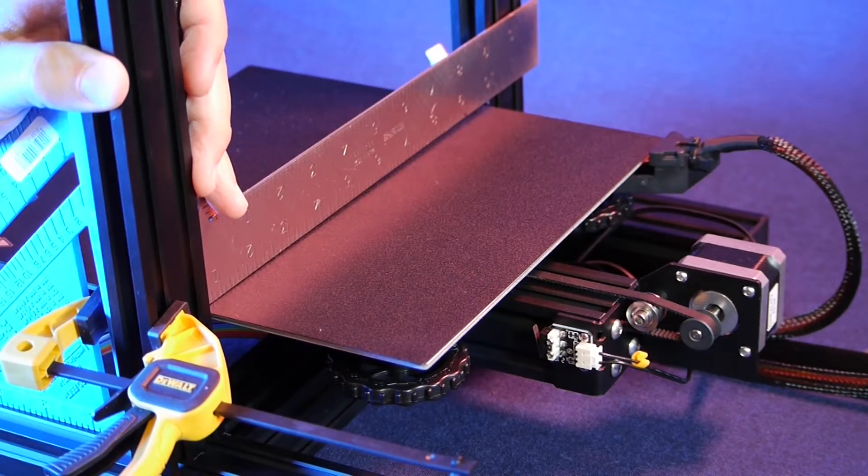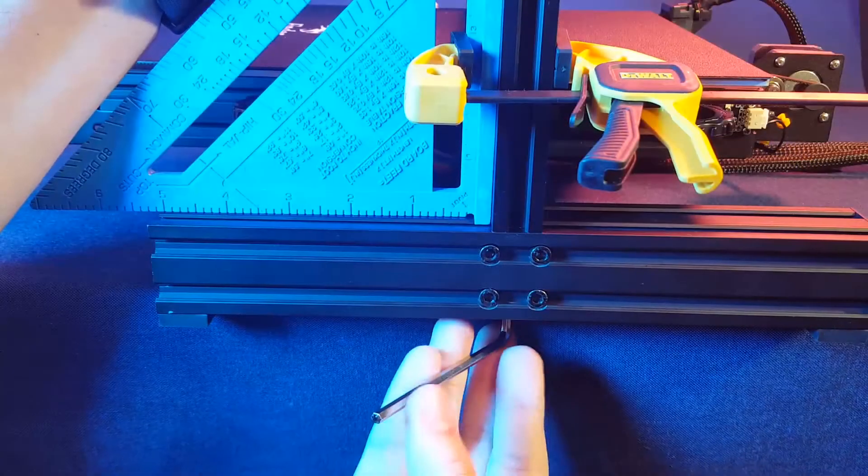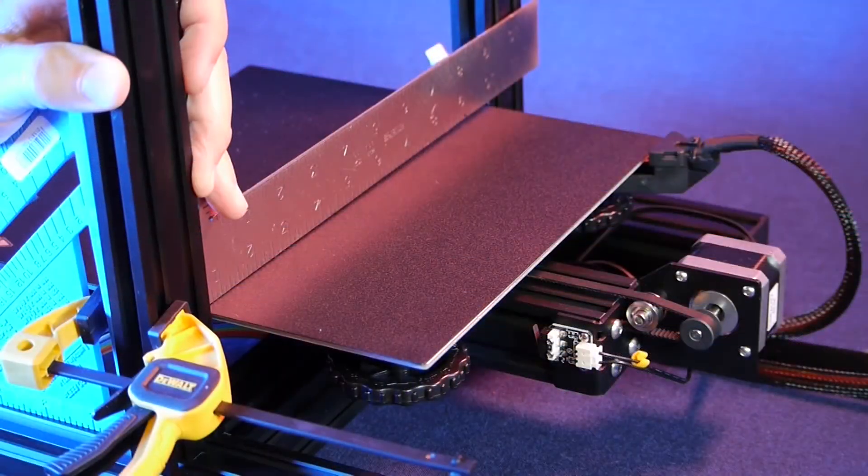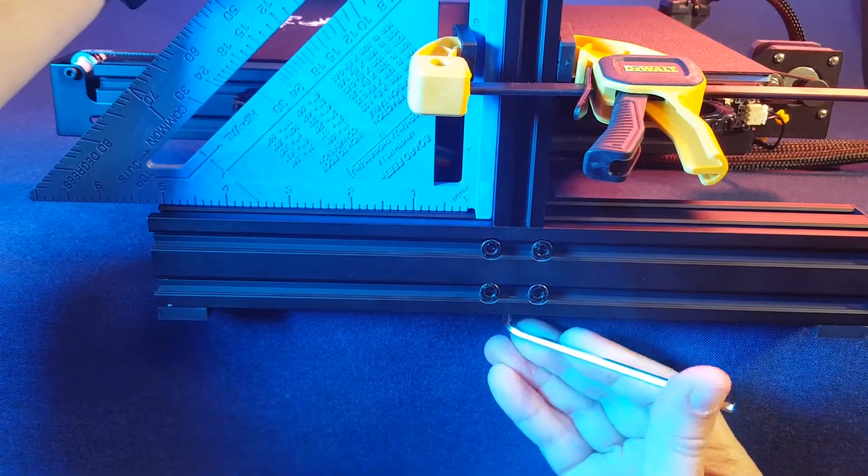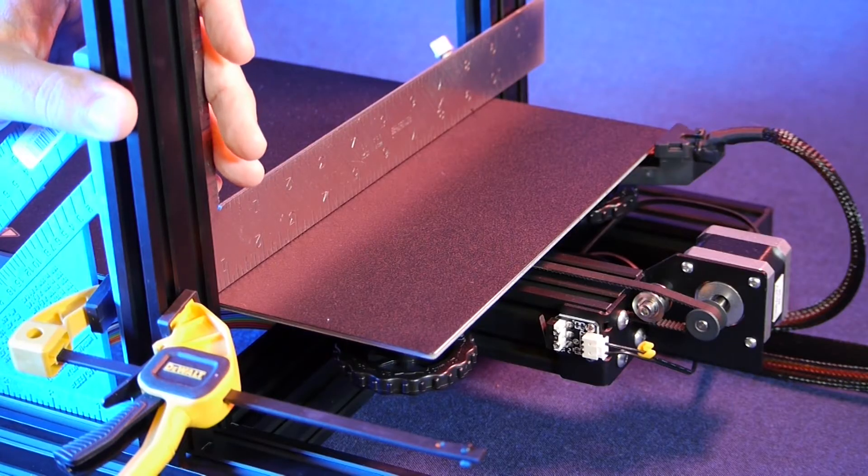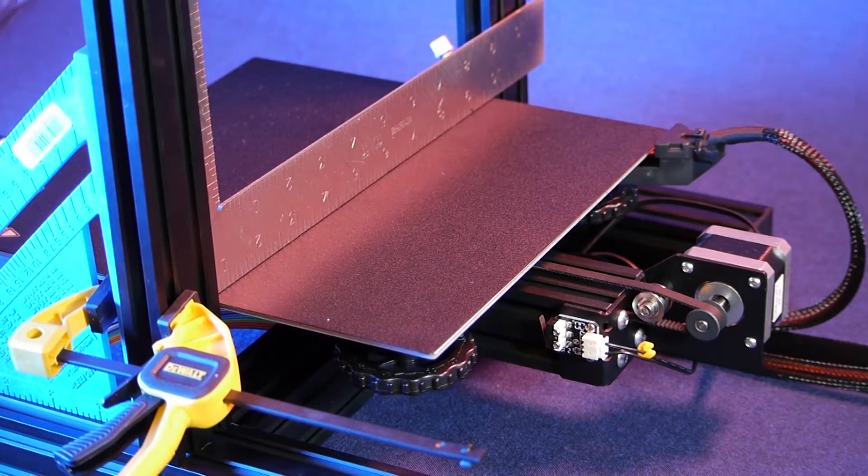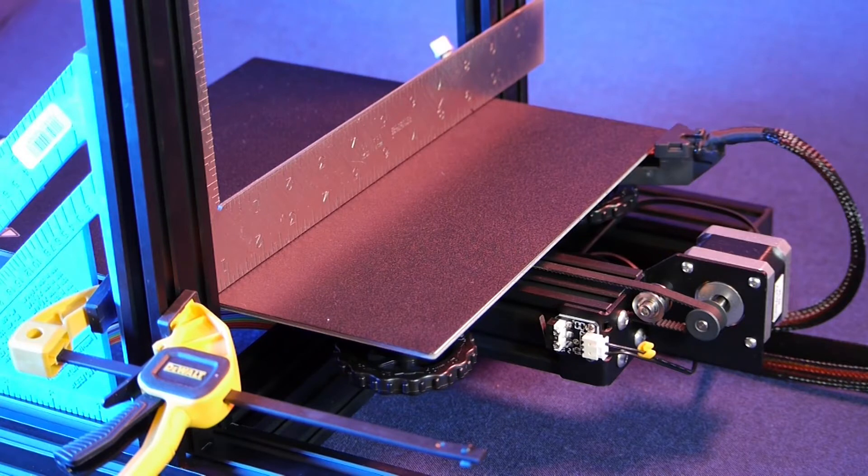Now, remember that you are tightening steel screws into aluminum threads. So, you may have to loosen one screw to tighten the other one in order to achieve this perfect alignment without destroying the threads. This step is finally done.